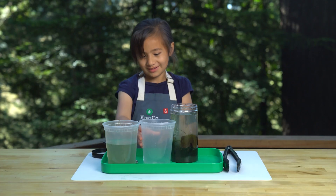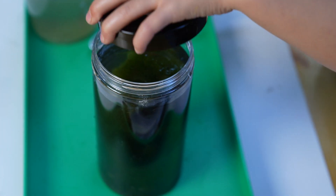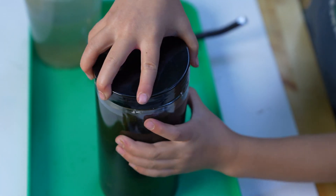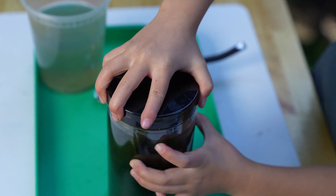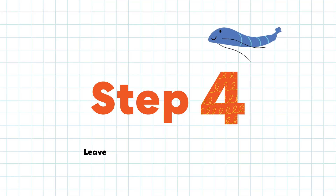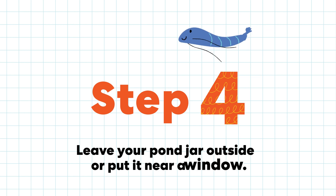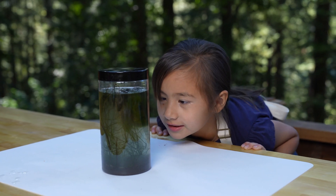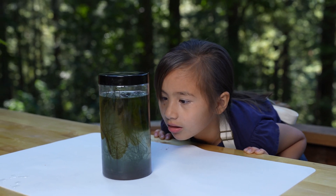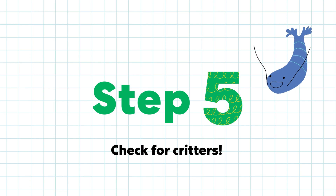Some of the critters are going in. That's enough. We have to put the lid on very tight. Step four: leave your pond jar outside or put it near a window. We have to wait for the water to settle.